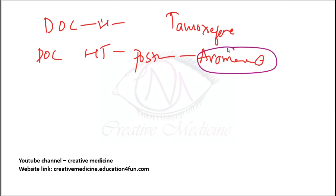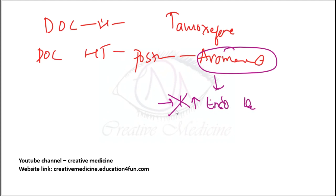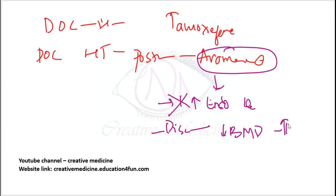The advantage of aromatase inhibitors is that they do not increase the risk of endometrial carcinoma. The disadvantage of aromatase inhibitors is that they decrease bone mineral density and thus increase the risk of fractures in these patients.